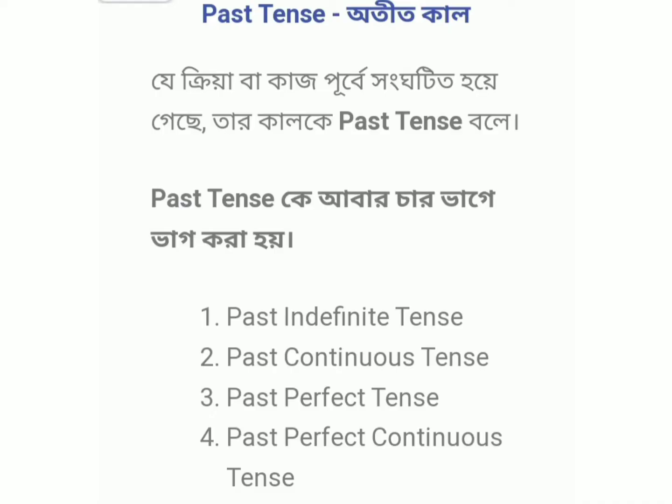Past tense means 'otitkal' (past time). Any action that was completed before the present is called past tense. Past tense is divided into four parts: past indefinite, past continuous, past perfect tense, and past perfect continuous tense.